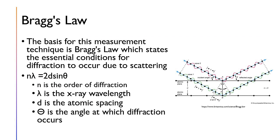The measurement technique of wide-angle X-ray scattering is based on Bragg's Law, which states the essential conditions for diffraction to occur due to scattering. Bragg's Law is n·λ = 2d·sinθ, where n is the order of diffraction, λ is the X-ray wavelength, d is the atomic spacing in the planes of the atom, and θ is the angle at which diffraction occurs.